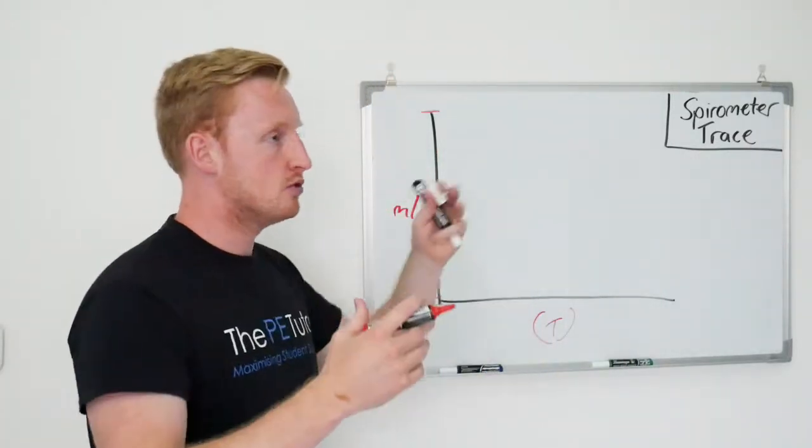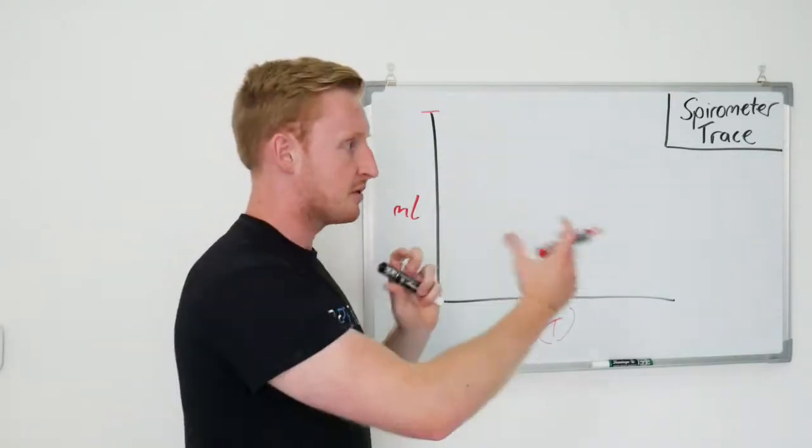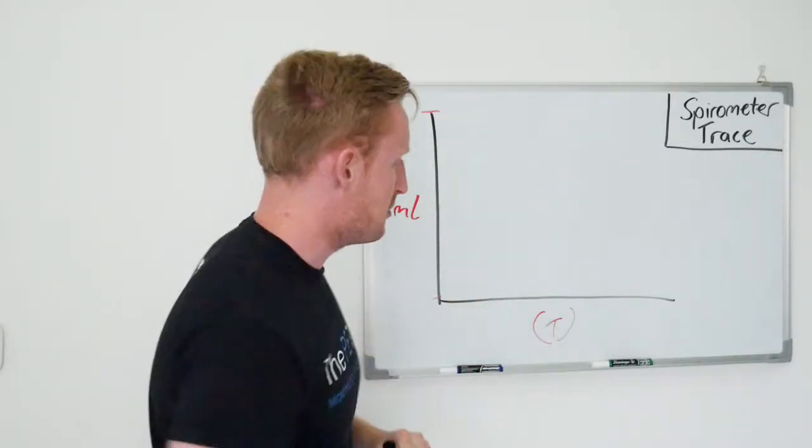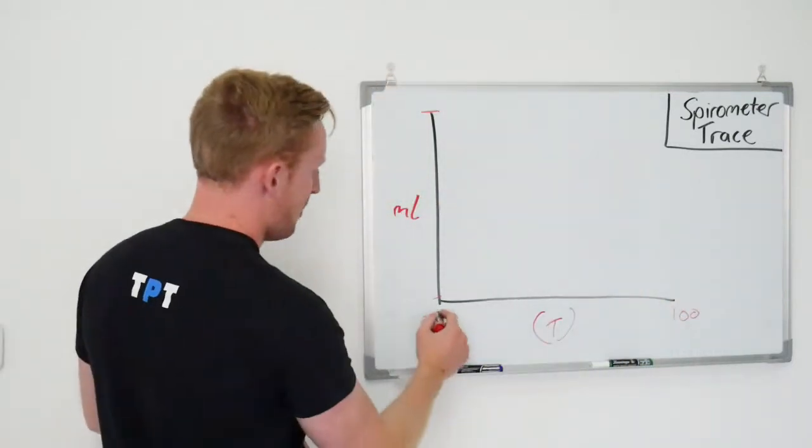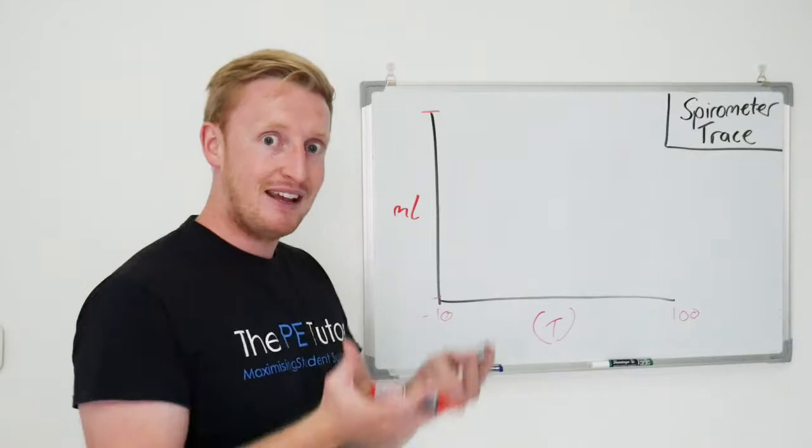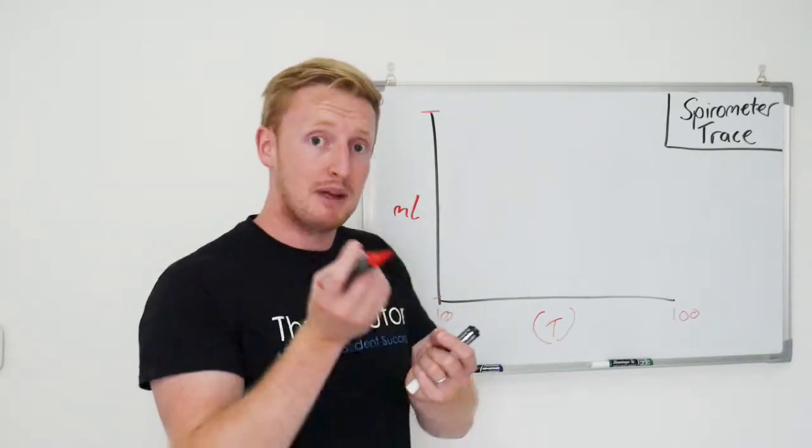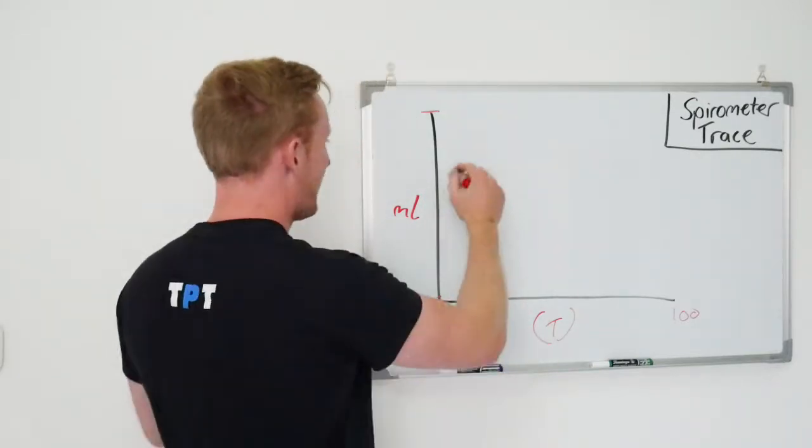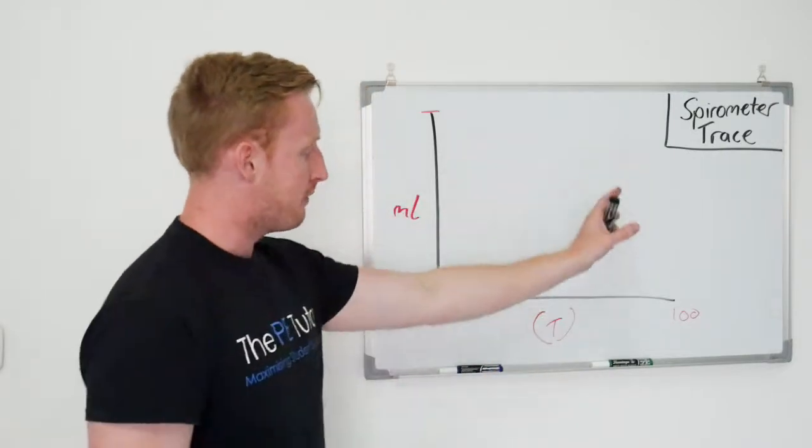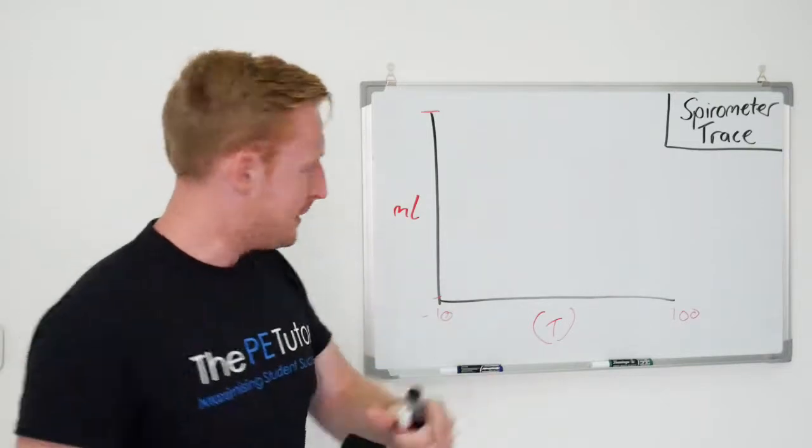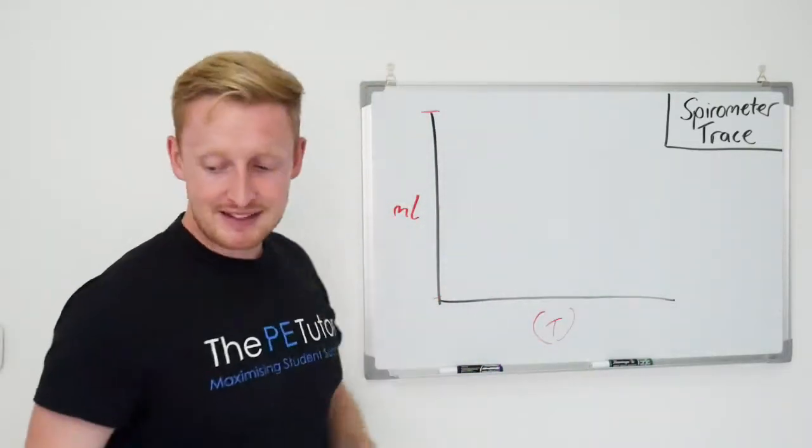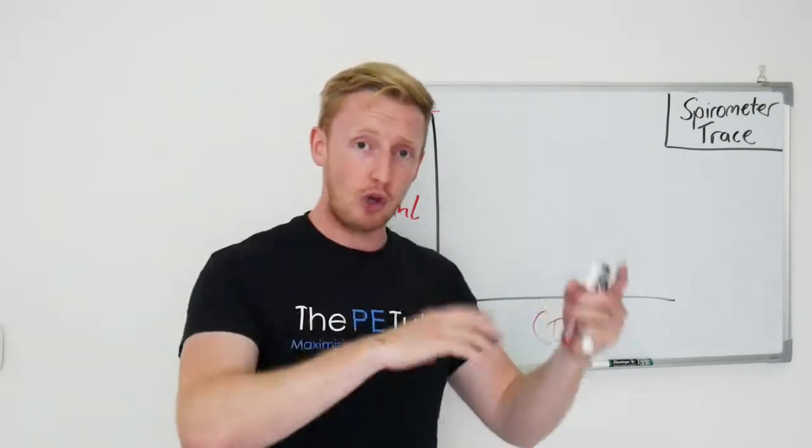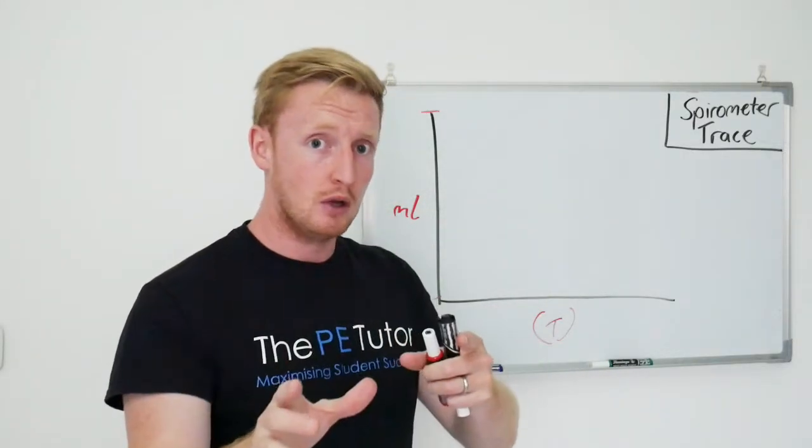So let's say you wanted to track someone's breathing for a 90 minute football match, then you might put a hundred down here so you can include recovery as well, and you might put minus ten here to get the anticipatory rise because of the nerves. But we're not going to be looking in too much detail at that today. What we're going to be looking at are the definitions of the different volumes and capacities that you need to know for your exam.